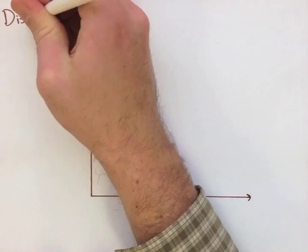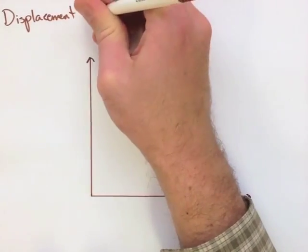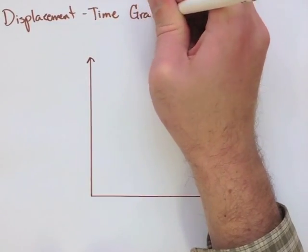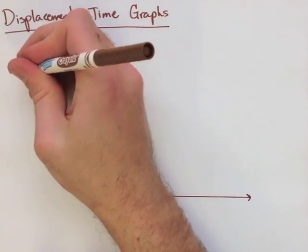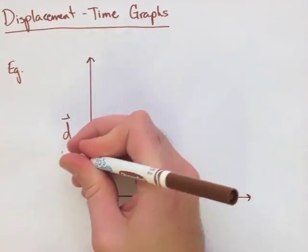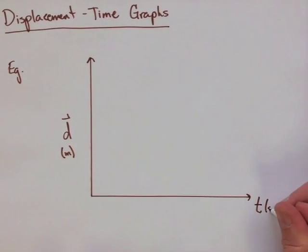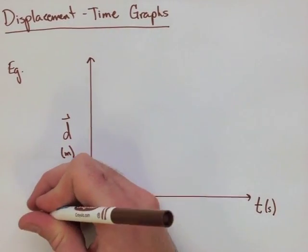As seen in Grade 9 and 10 Math, we can always change motion diagrams into graphs. In this first note of the three graphs we're going to look at, we're going to look at displacement and time. We're always going to have our displacement on our y-axis and our time on our x-axis.